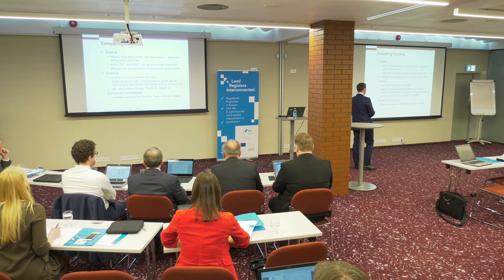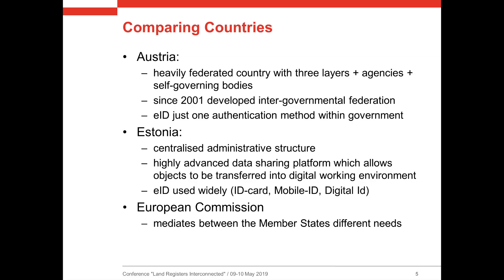Let's compare countries briefly. Austria is heavily federated with three layers: federal, state, and municipality, plus agencies and strong self-governing bodies. We're quite good at being complicated. Because of this complexity, Austria started in 2001 developing a so-called intergovernmental federation, where one governmental agency can access other governmental systems to retrieve information directly — that's how we deal with this highly complex system.